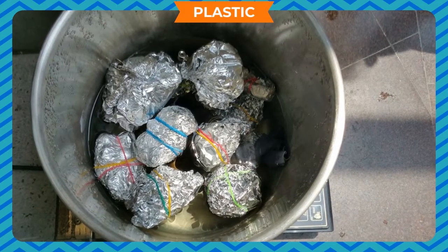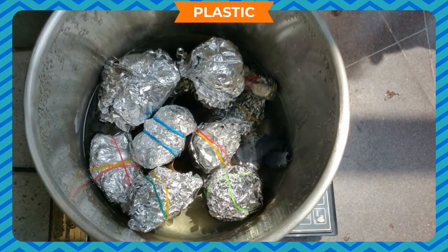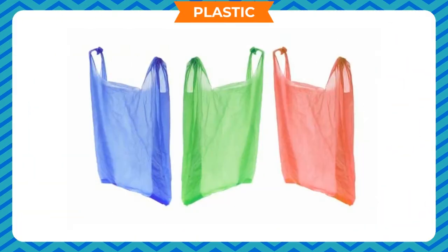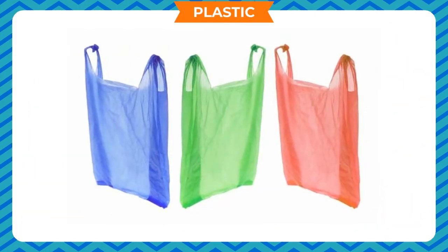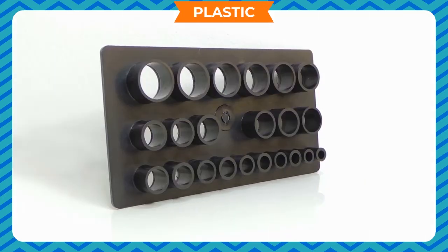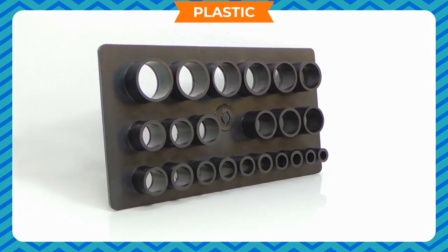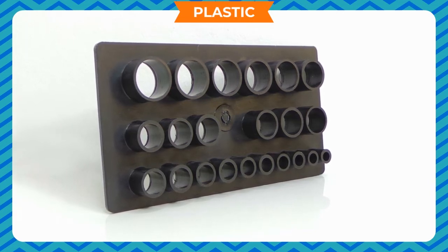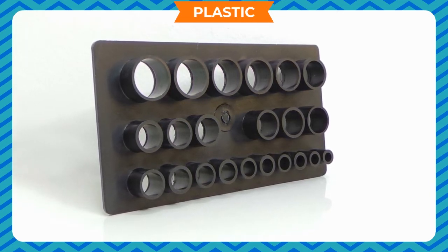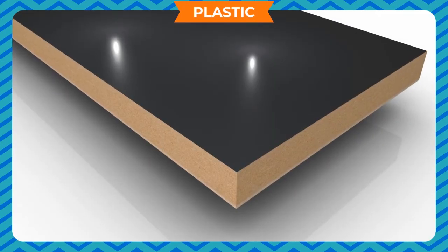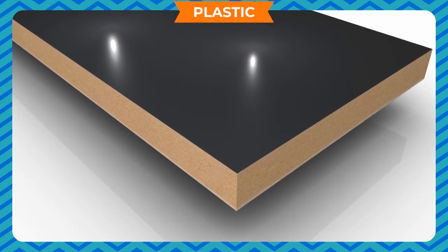Plastics which get deformed easily on heating and can be bent easily are known as thermoplastics. Polyethene and PVC are some examples of thermoplastics. On the other hand, there are some plastics which when molded once cannot be softened by heating. These are called thermosetting plastics. Bakelite and melamine are some examples.